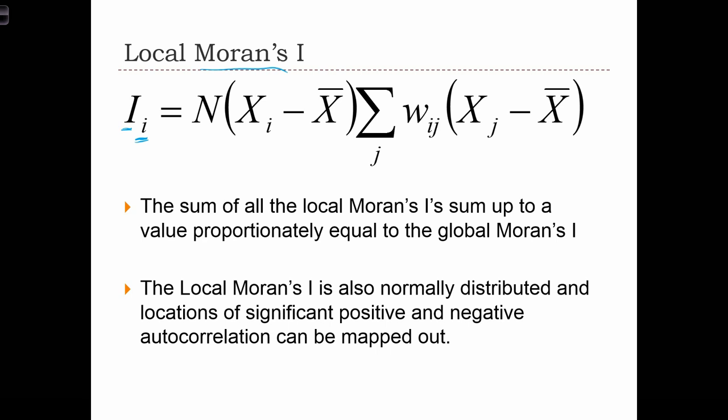Here we can see that the local Moran's I statistic is just a product between the deviation for point i times the sum of all the deviations in the neighborhood surrounding point i. We take the sum of all the other deviations but only select the ones with positive connectivity, with a strong w value between i and j.